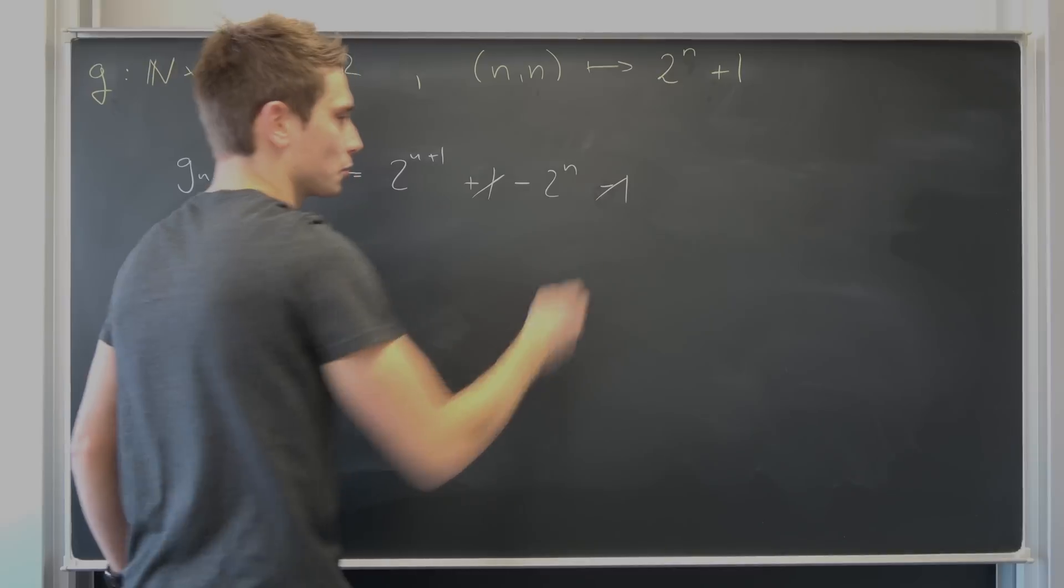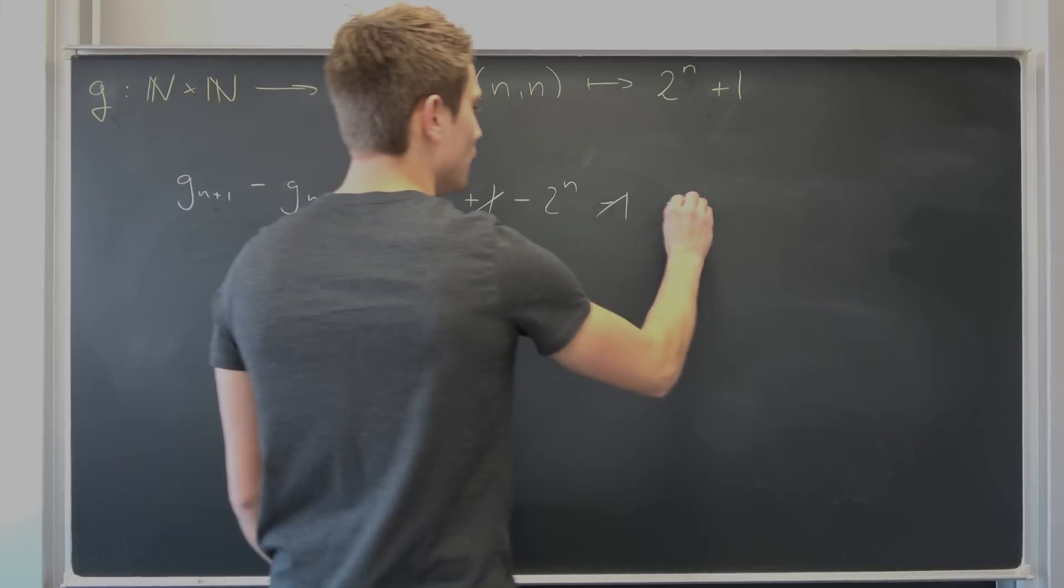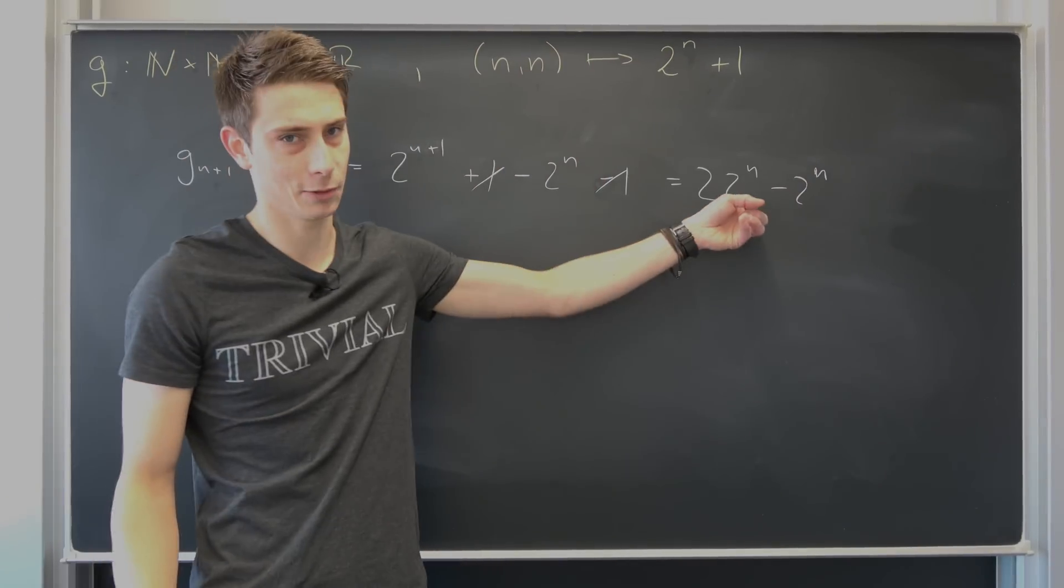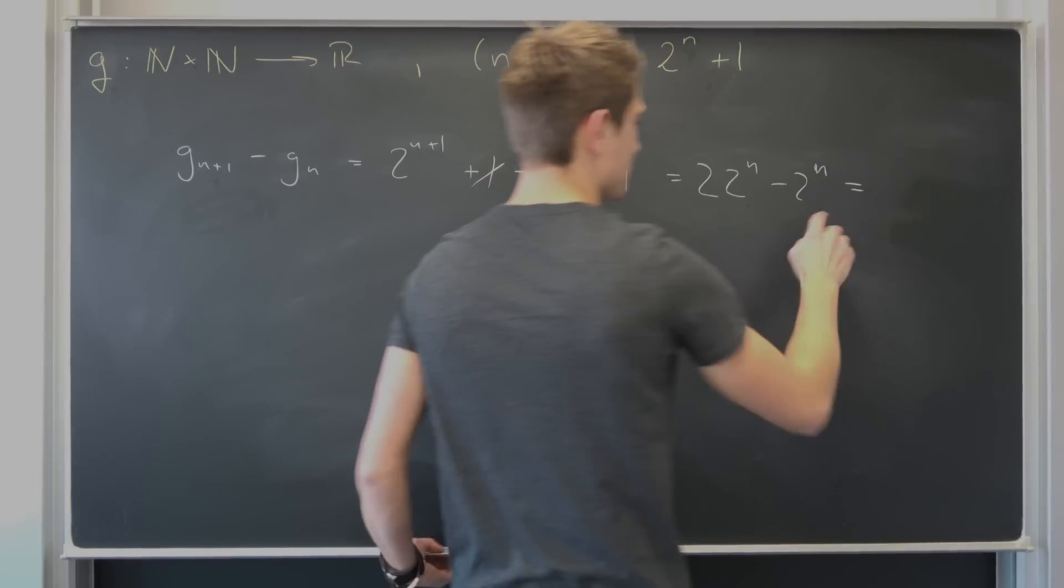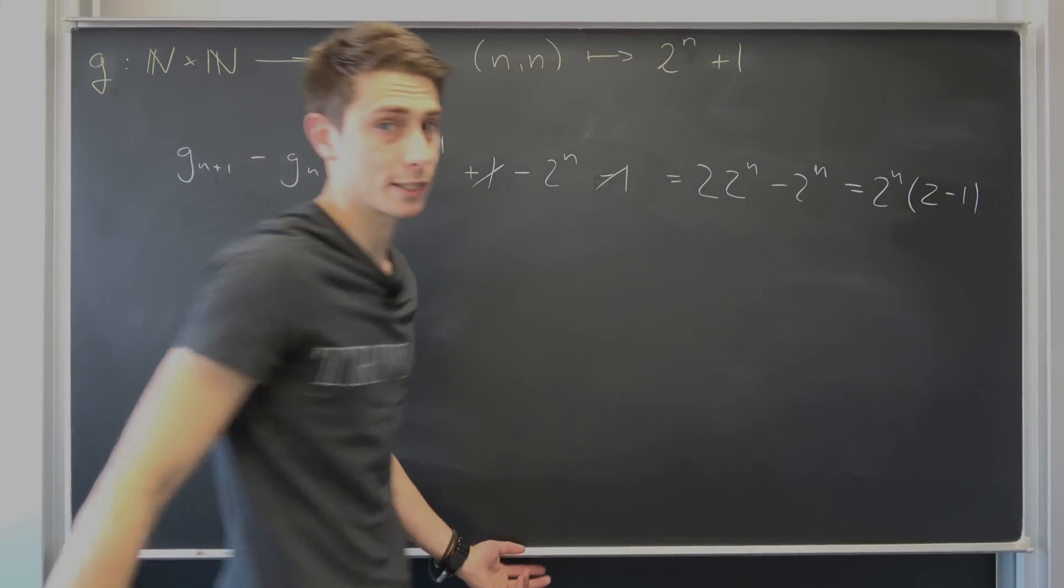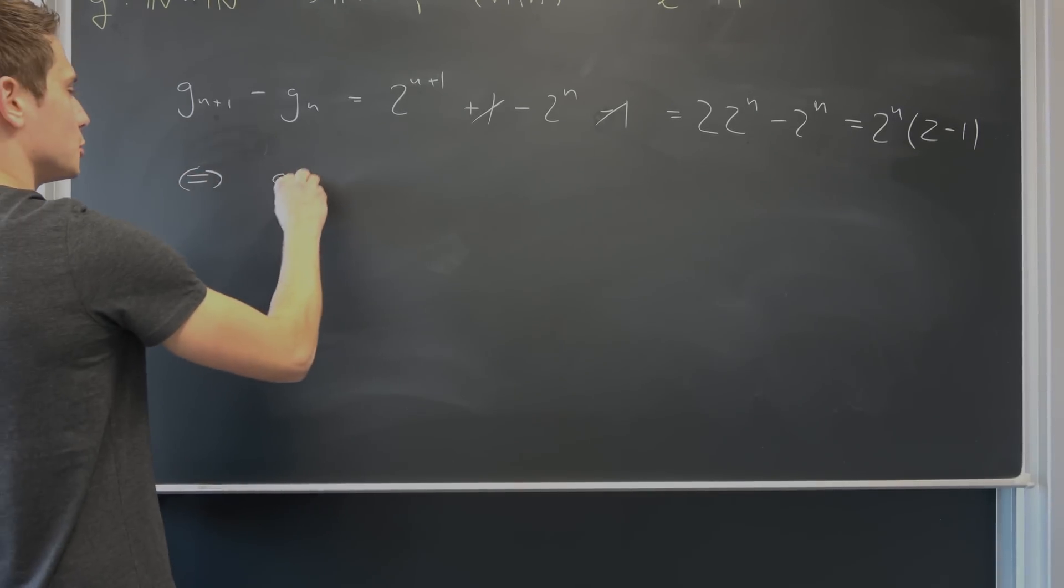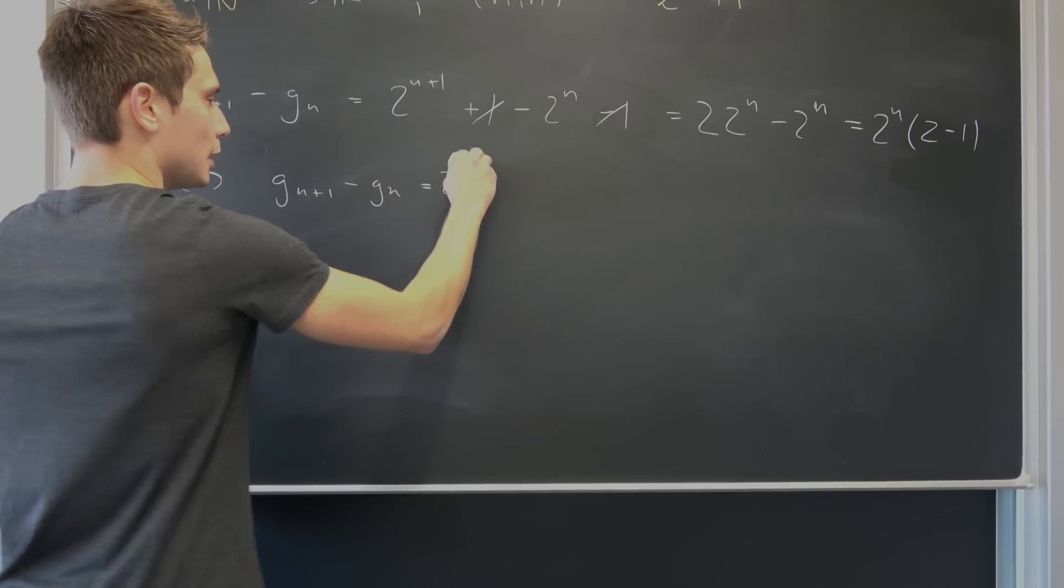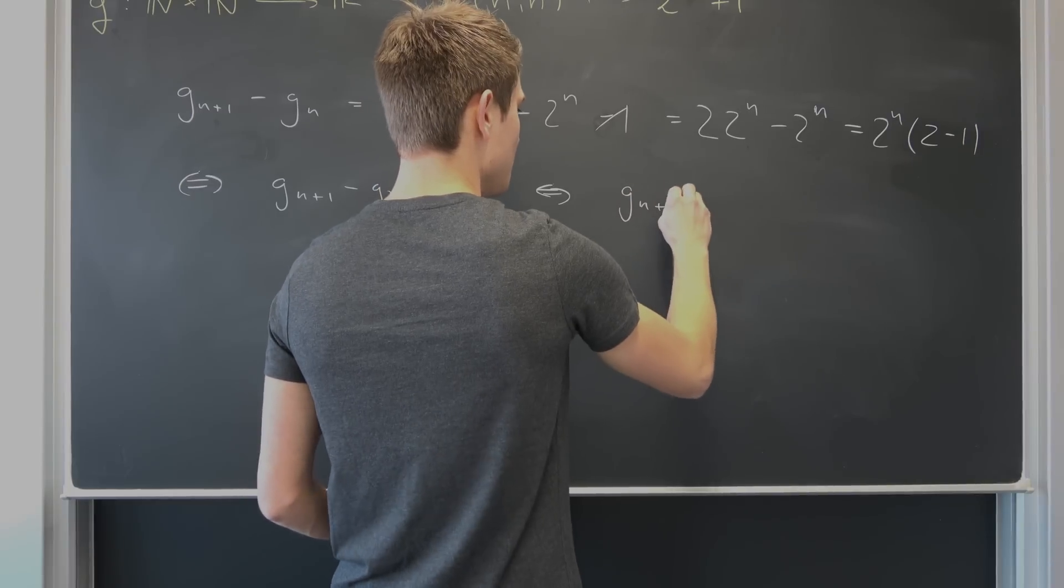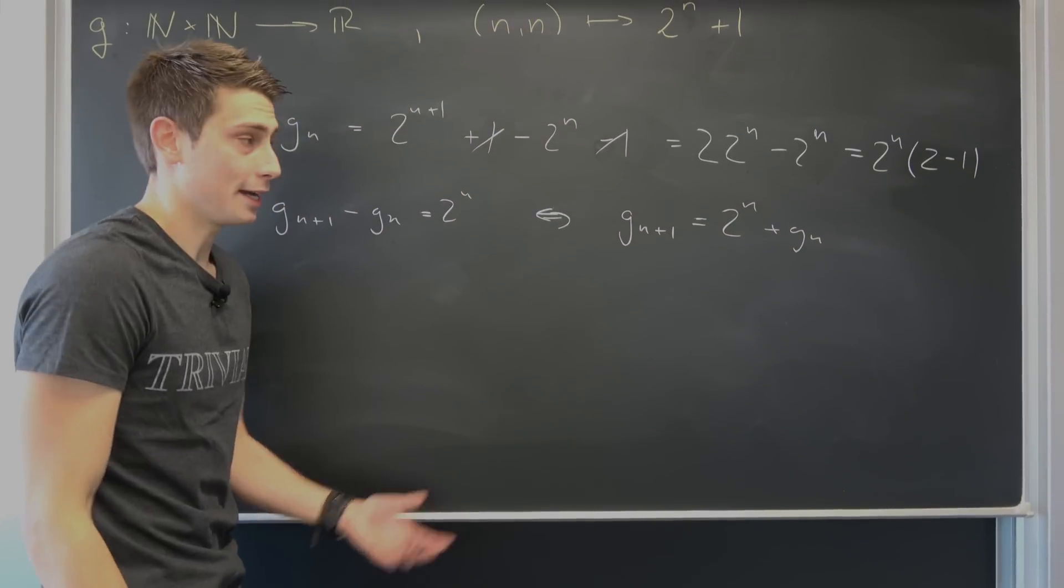You see this and that is going to cancel out, and 2^{n+1} is nothing but 2 times 2^n. So this is 2 times 2^n minus 2^n, and obviously we can factor out the 2^n now. So this is 2^n times (2 minus 1). Obviously this is just 1, so we are going to end up with 2^n. So that's equivalent to saying g_{n+1} minus g_n is nothing but 2^n.